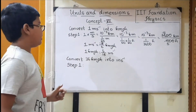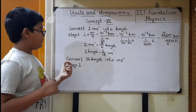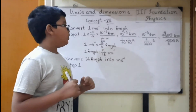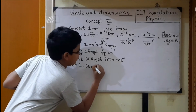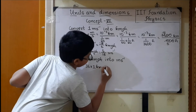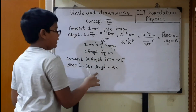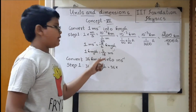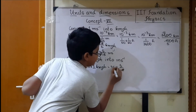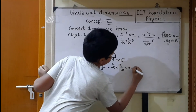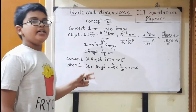Using these two formulas, we can convert any unit of speed. For example, convert 36 kilometer per hour into meter per second. 36 kilometer per hour equals 36 into 1 kmph. Since 1 kilometer per hour equals 5 by 18 meter per second, we get 36 into 5 by 18. 18 cancels, giving us 10 meter per second. This is how we convert units for speed.